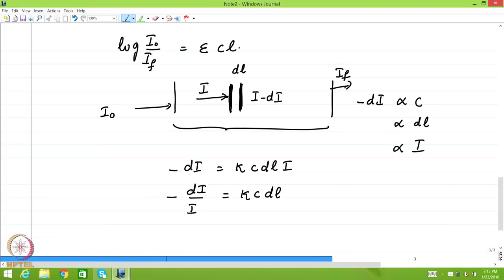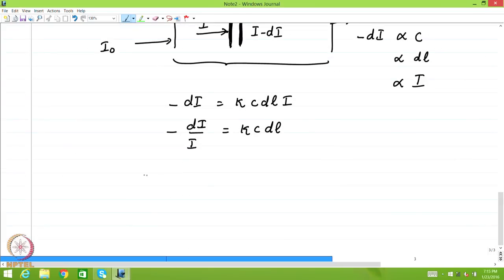if we start with I naught here as the initial intensity and if we end up with I f as the intensity of light emitted at the other side of the cell, then you know when you integrate this equation you integrate it between the limits I naught and I f and write dI by I and write that as the length being also integrated, it is kappa times C dL